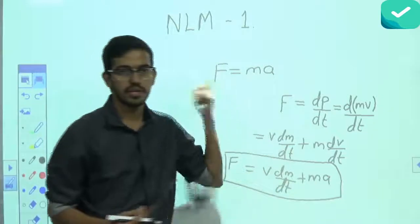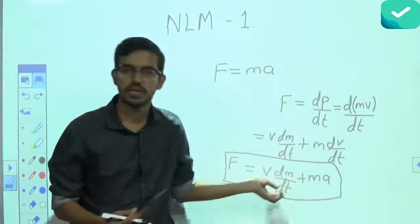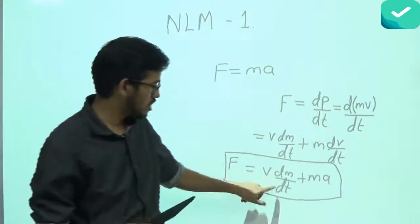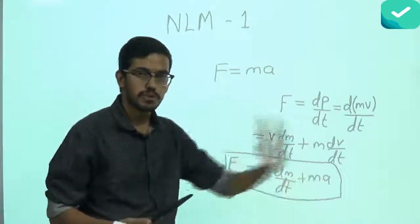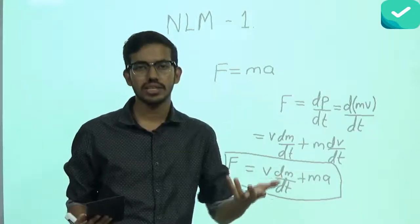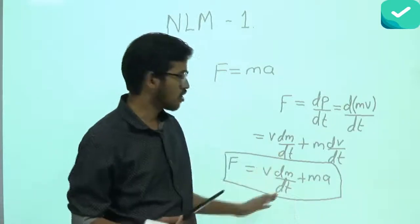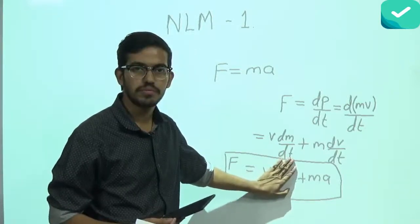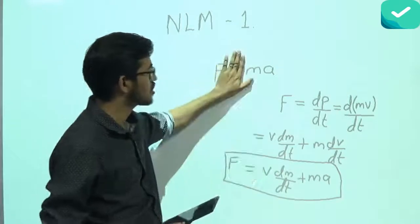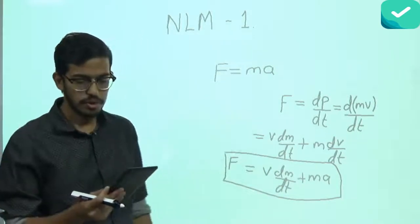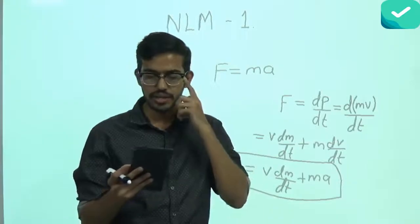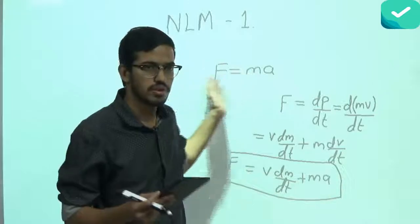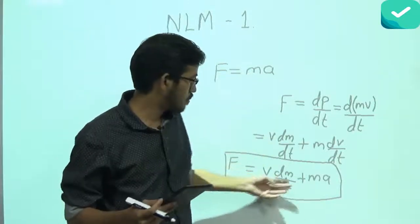So the second term is what we study; the first term we forget. Why do we forget it? Because in most cases it is zero. If you are pushing any object, its mass is not changing — mass remains constant even after applying force, so the first term becomes zero and you are left with F equals ma. That's why Newton's second law as we know it is F equals ma. But scientists at ISRO cannot use F equals ma — they have to use the full formula.